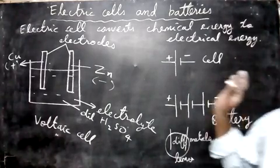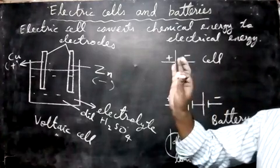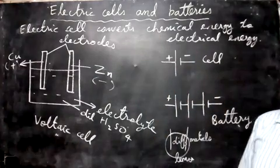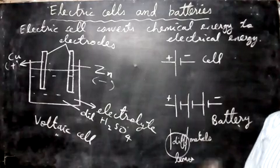The first person to make the cell was Alessandro Volta. To honor him only we give the SI unit as volt, that you must also remember.